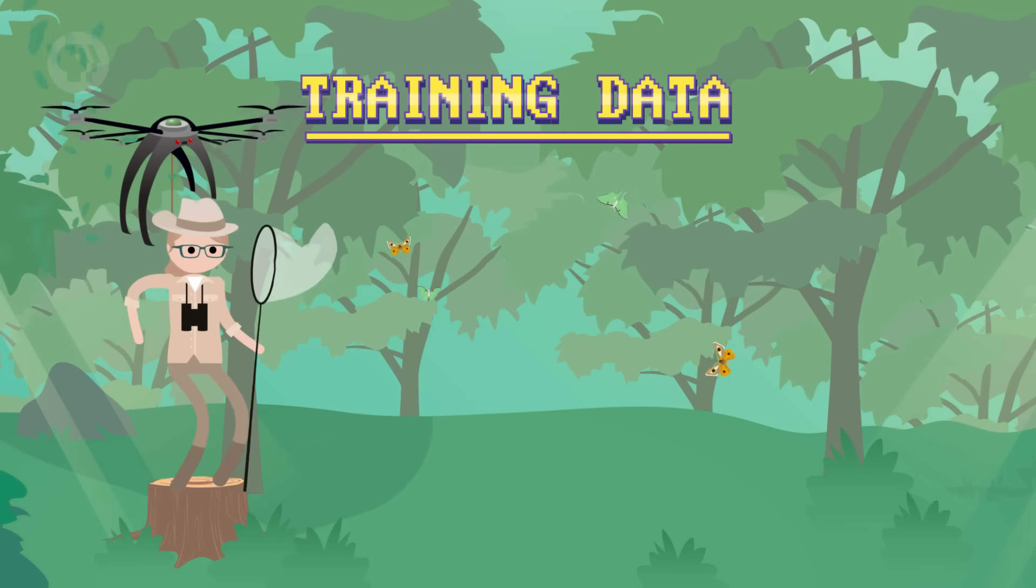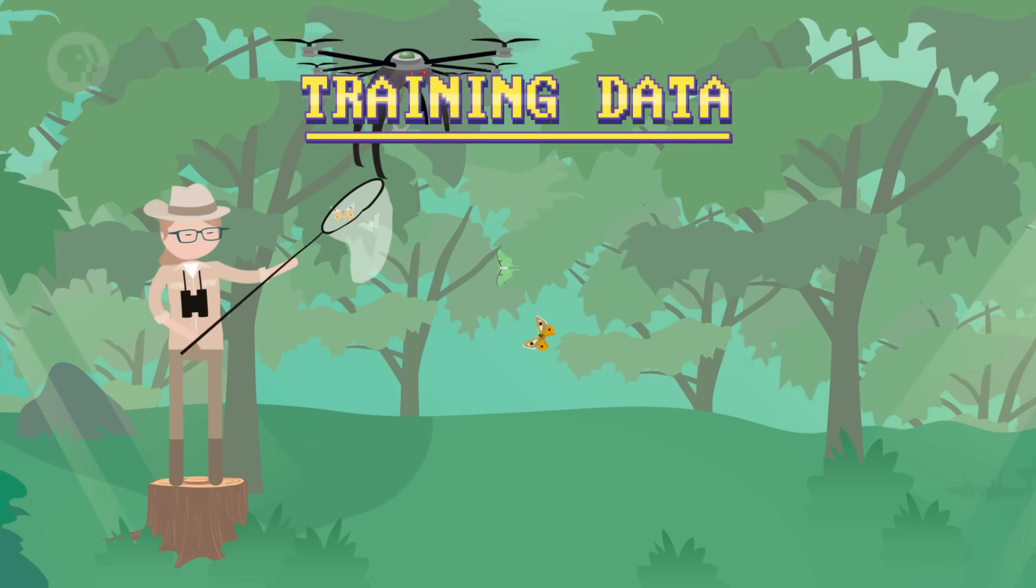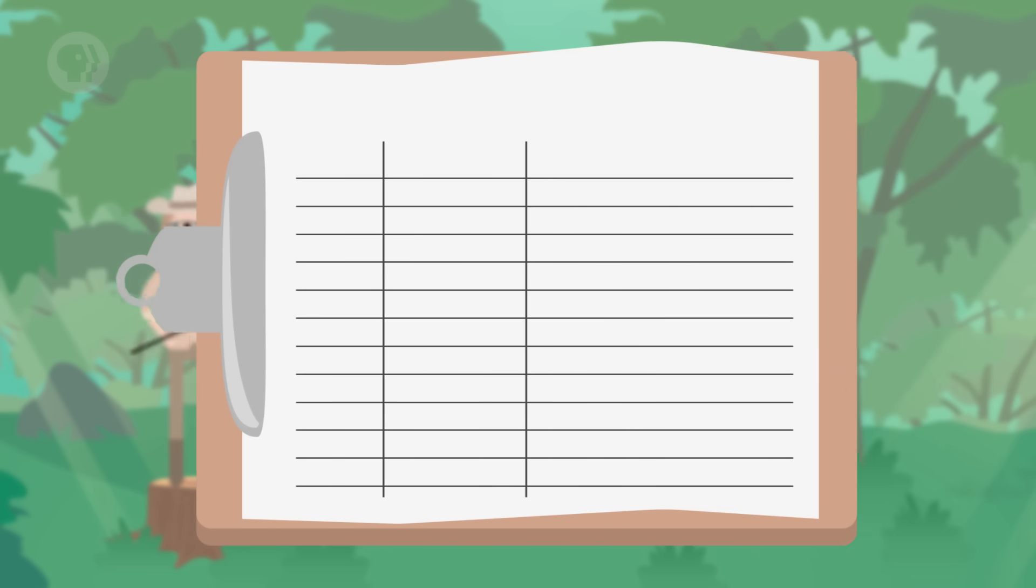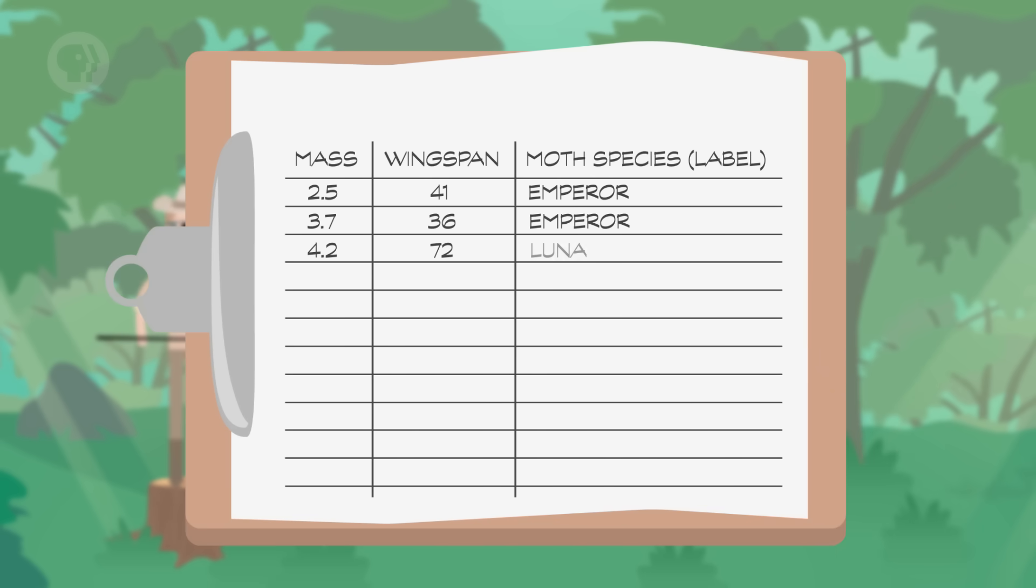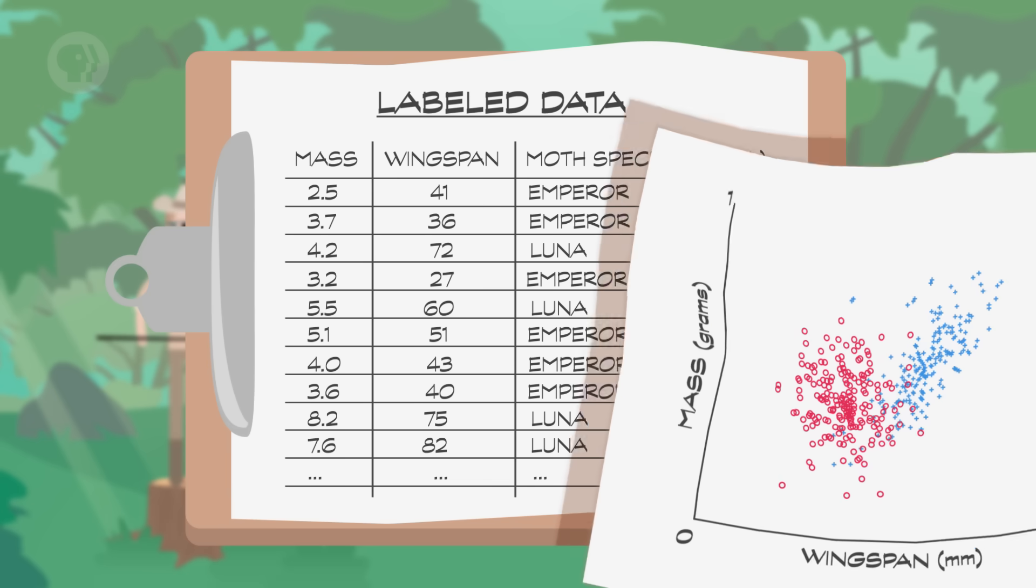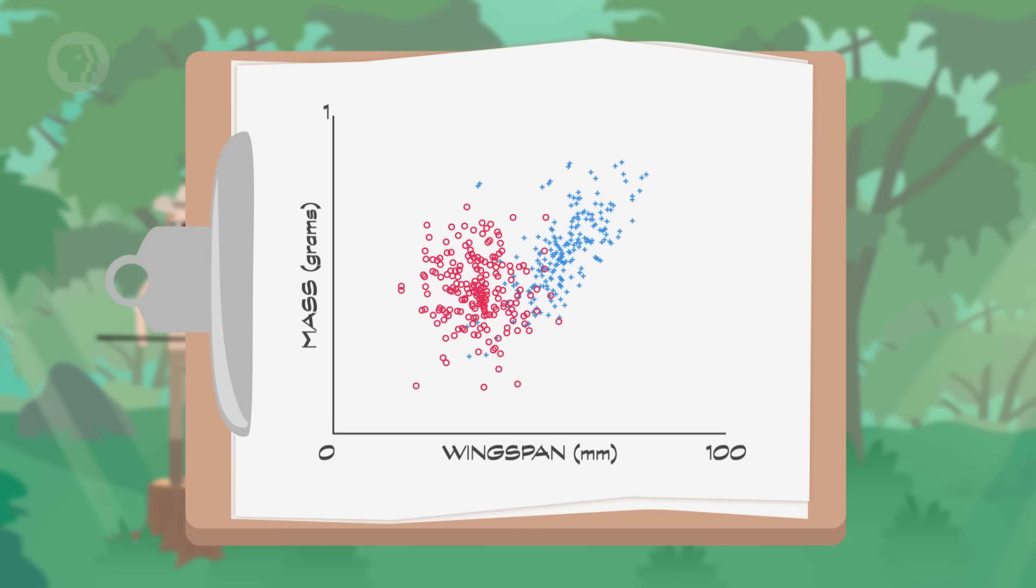To get that, we'd send an entomologist out into a forest to collect data for both lunar and emperor moths. These experts can recognize different moths, so they not only record the feature values, but also label that data with the actual moth species. This is called labeled data. Because we only have two features, it's easy to visualize this data in a scatter plot.